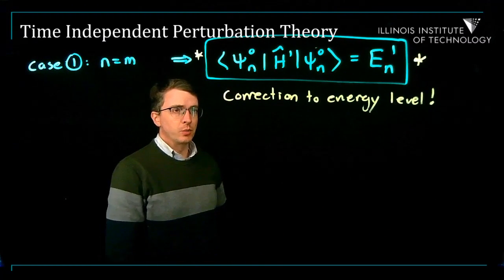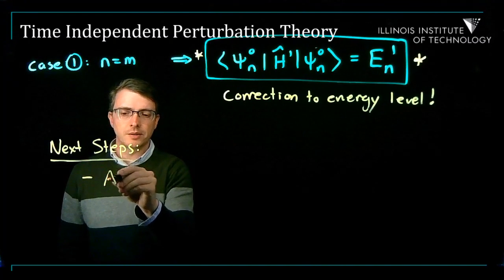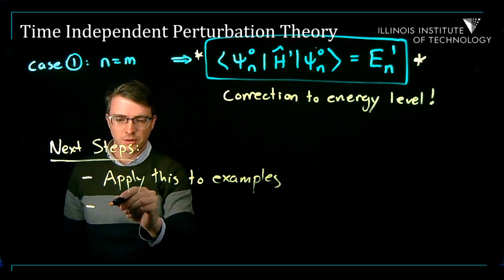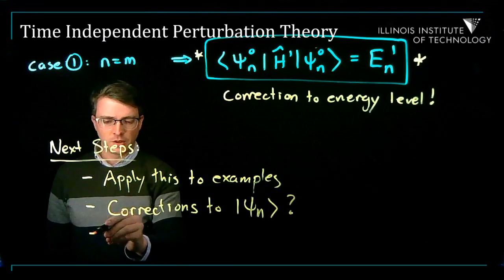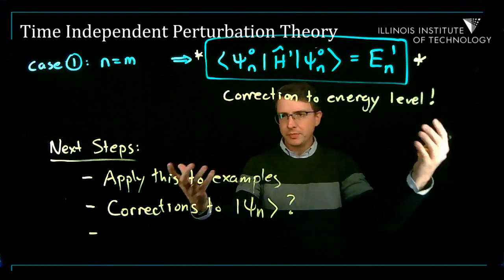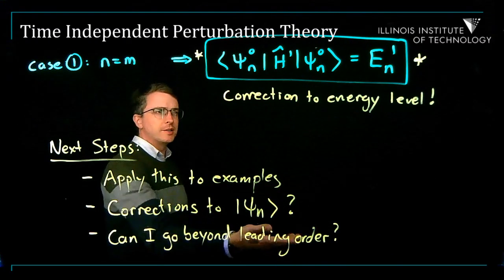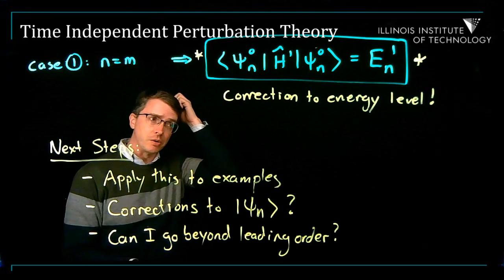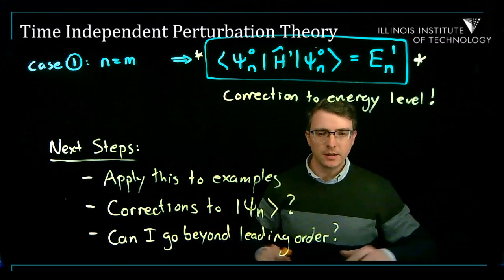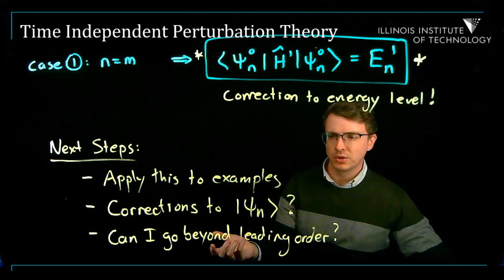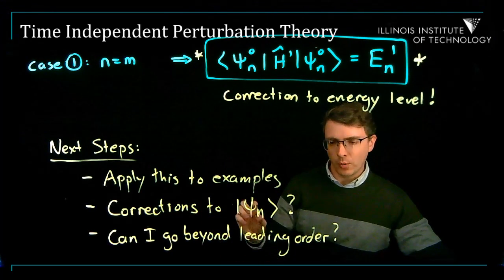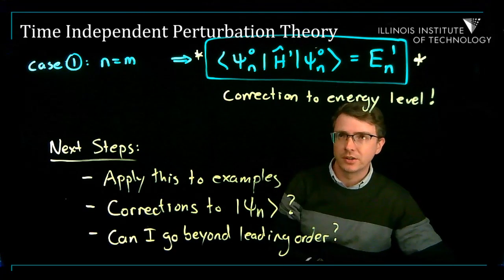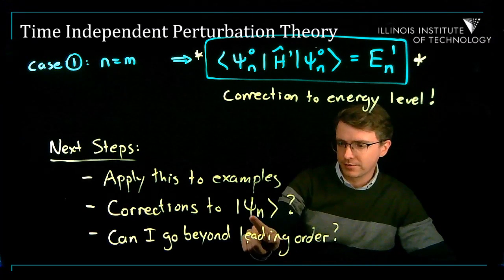We will see how to use this with some applications. I only gave you the correction to the energy level — I didn't explain how to get the corrections to the wave functions, so we need to work that out. You might also be wondering: we ignored terms quadratic in the perturbation, so can we go beyond leading order? Can we include terms of order lambda squared? The answer is yes — you can extend this and make it more and more accurate, and we will learn how to do that.